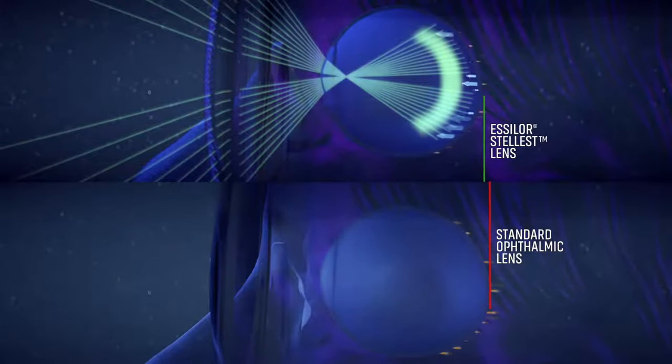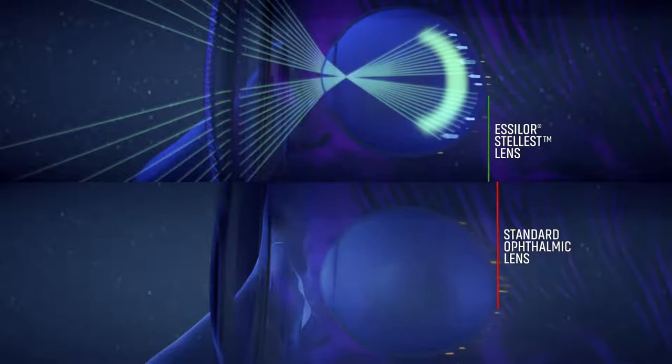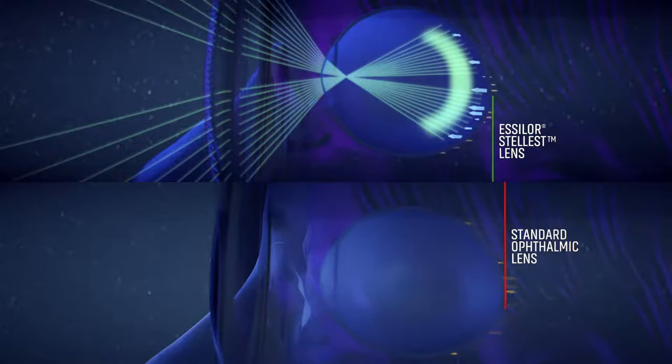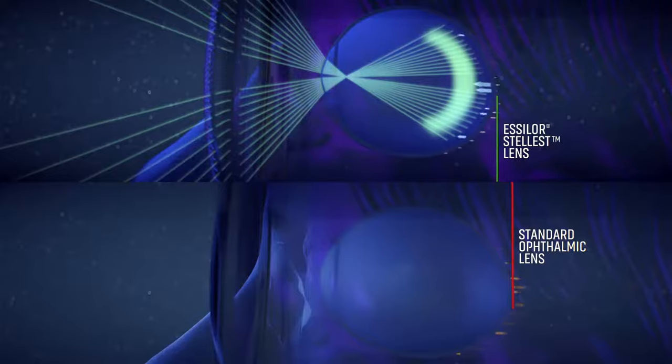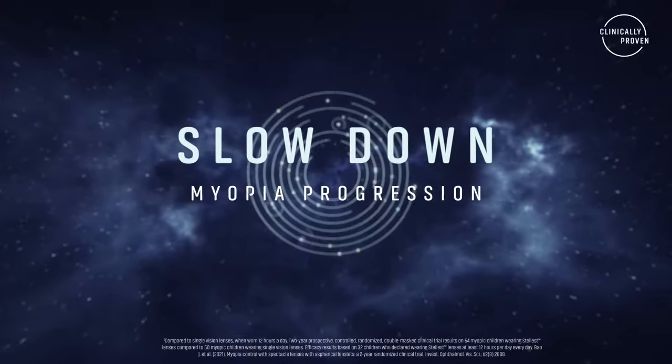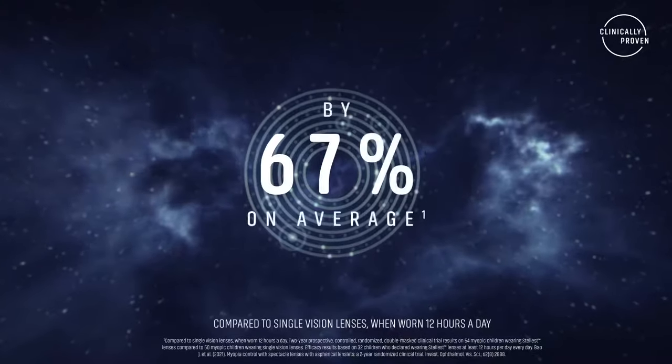Clinical studies on children showed that compared to single vision lenses, Essilor Stellest lenses slow down myopia progression by 67% on average when worn 12 hours a day.